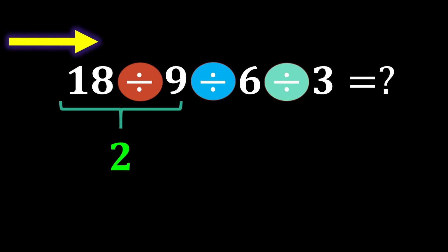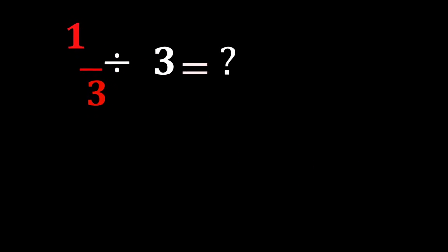18 divided by 9 gives us 2. And 2 divided by 6 gives us 2 over 6. Which, if we simplify the numerator and the denominator by 2, results in 1 over 3. And the expression becomes 1 over 3 divided by 3.